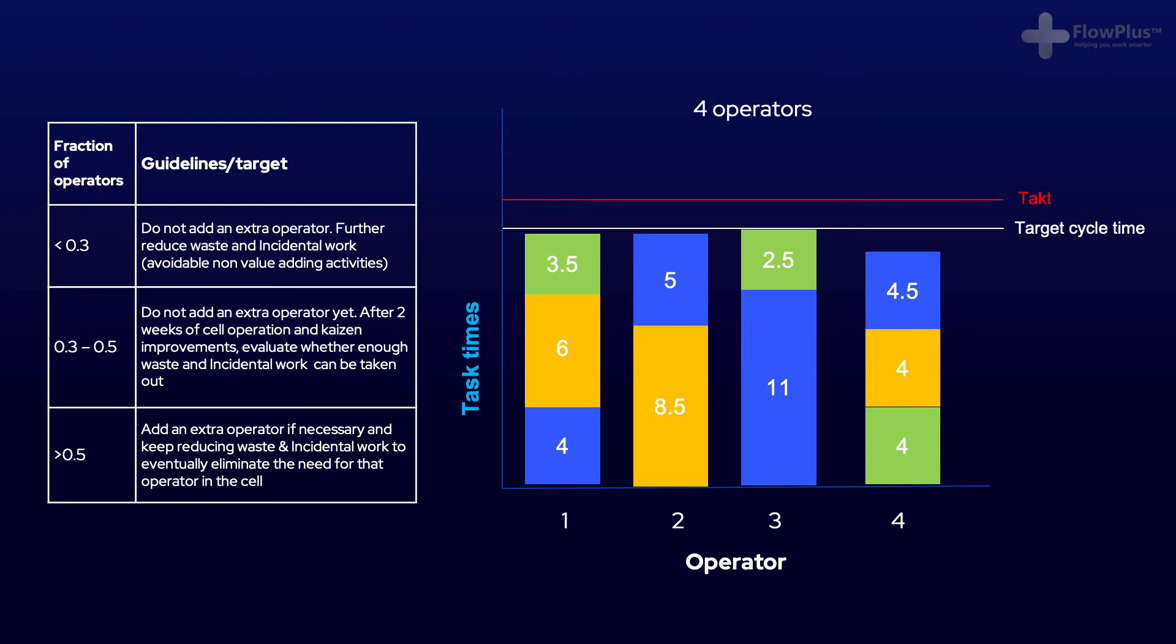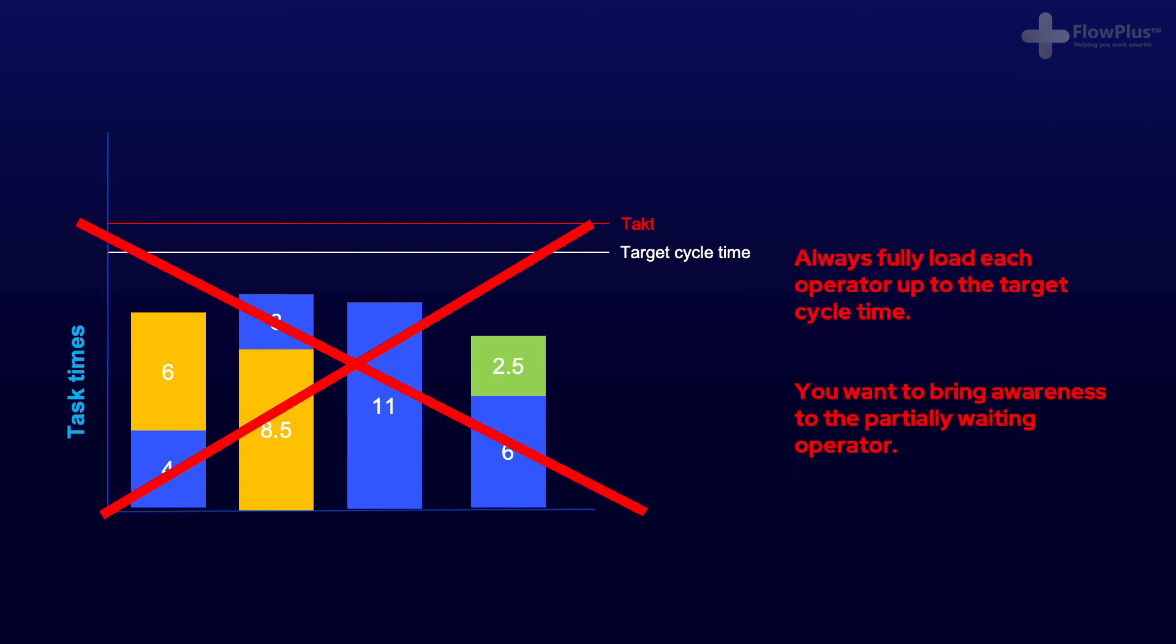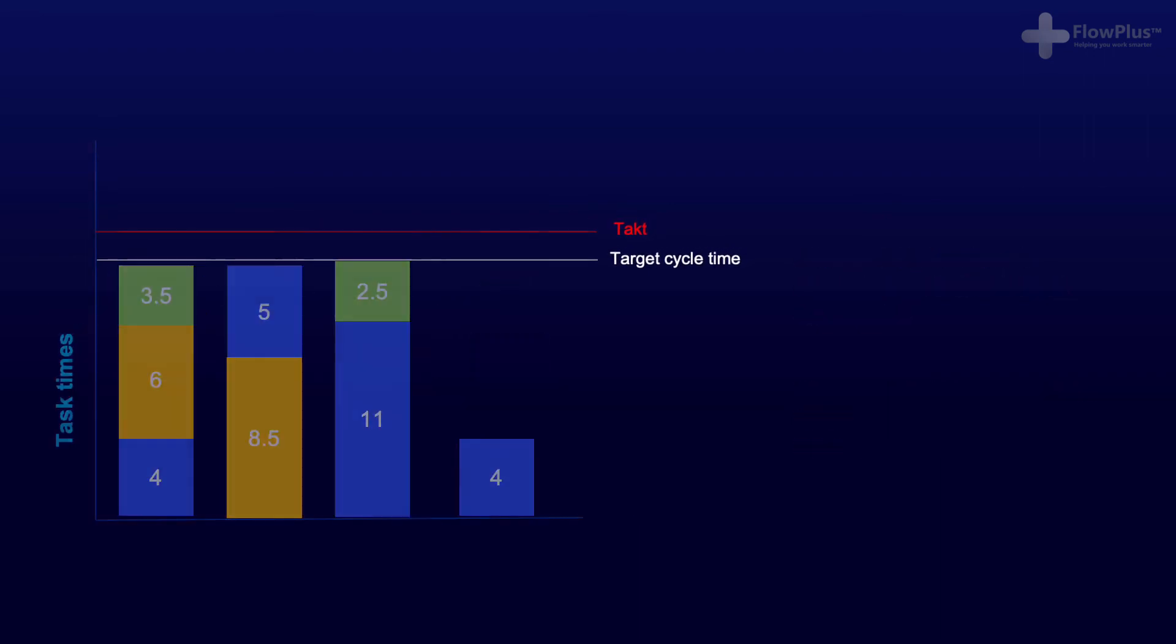So what would we do if the final operator had even less utilisation? Well, whenever you distribute work, you should always aim to fully load each operator up to the target cycle time. The worst thing to do would be to spread the work evenly. Secondly, as people will fill their available time with non-value adding activities to keep themselves busy. That is just human tendency to keep people busy or appear to be busy.